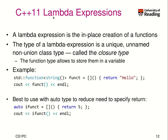So let's talk about lambda expressions. A lambda expression is the in-place creation of a function. The type of a lambda expression is a unique, unnamed, non-union class type. It's called a closure type. This kind of type allows you to store them in a variable, similar to the idea of function pointers that we used in C.